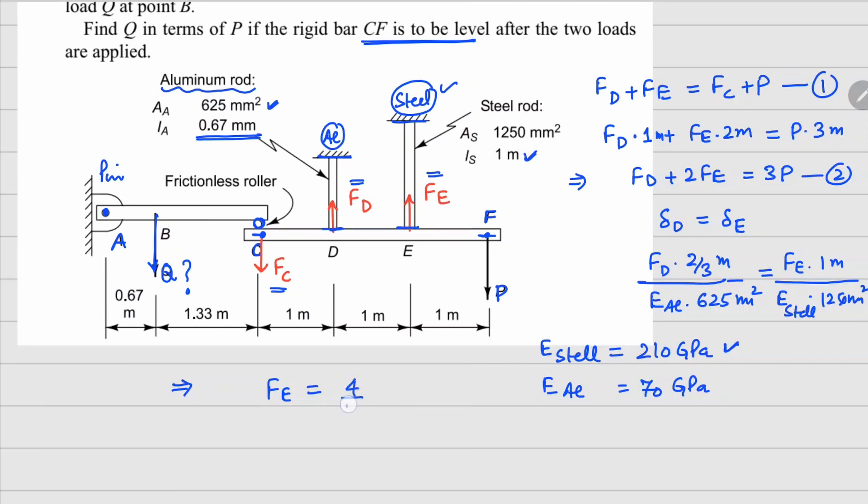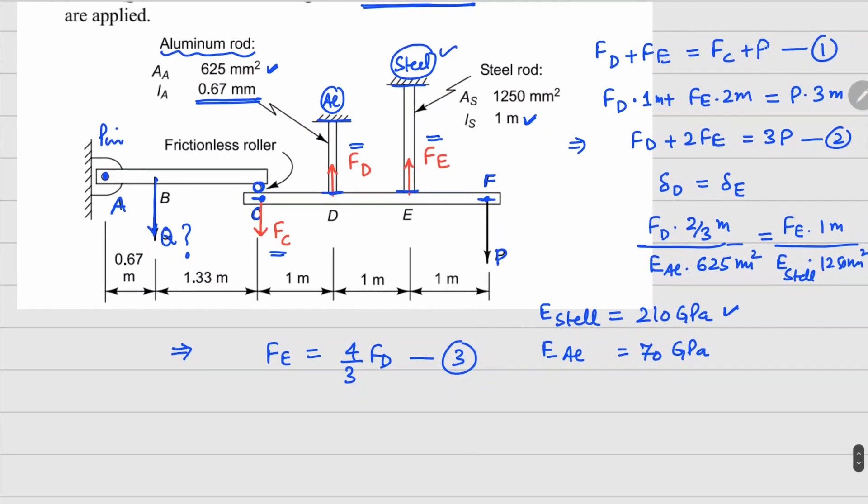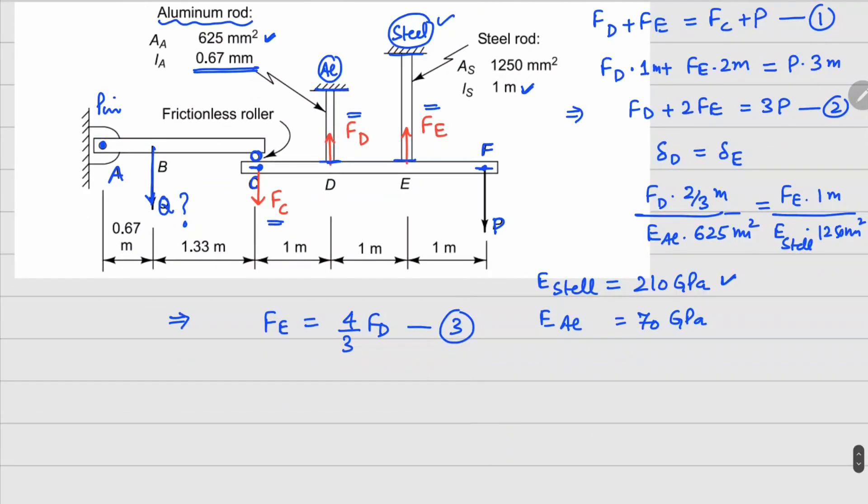So this third equation becomes this right here. Now we have first, second, and third, three equations in terms of FC, FD, and FE. If I solve the second and third equations, I get the value of FD equals P over 3 and FE equals 4P over 3. So these two values are known to us.